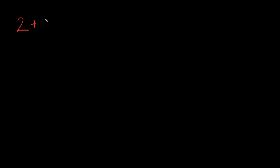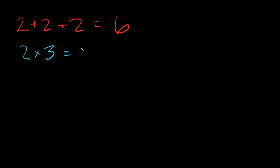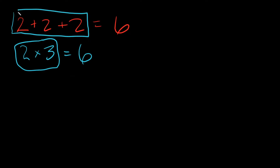Let's go back to addition and multiplication. Just like we have 2 plus 2 plus 2, that's equal to 6. There's a shorthand way of writing this, and that's with multiplication — simply 2 times 3, which is also equal to 6. This is an equivalent statement, but multiplication is just a shorter way of doing it instead of writing out 2 plus 2 plus 2 forever.